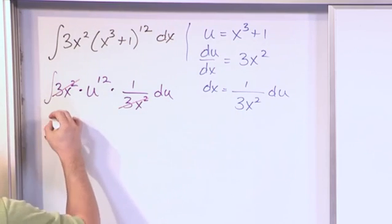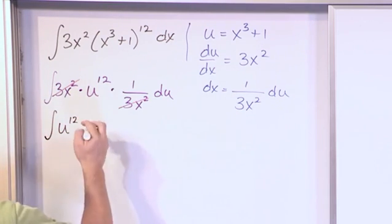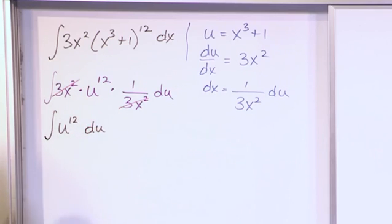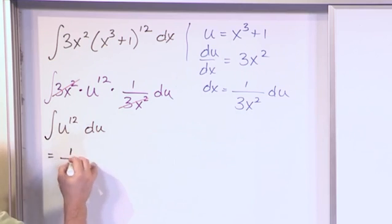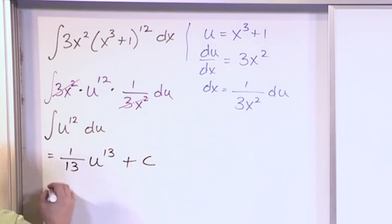And so finally, we have the integral of u to the 12th power du. So this is very simple, it's just a simple polynomial. So it's 1 over the exponent plus 1, which is 13, times u to the exponent plus 1, which is 13, plus a constant.